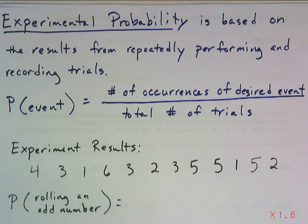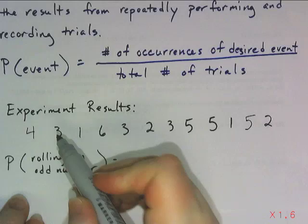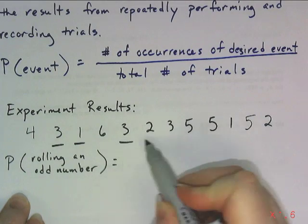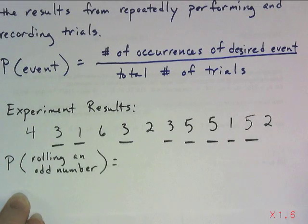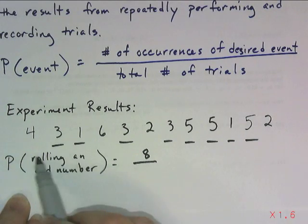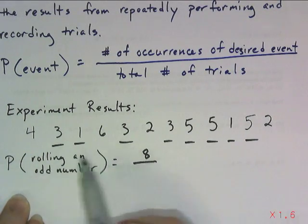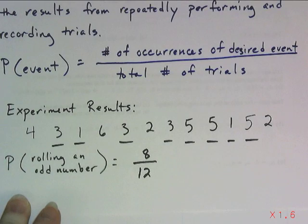and I wanted to know the probability of rolling an odd number based off of these experiment results. So how many times did I land on an odd number? One, two, three, four, five, six, seven, eight times out of a total number of - all the underlines are eight, nine, ten, eleven - out of twelve trials.